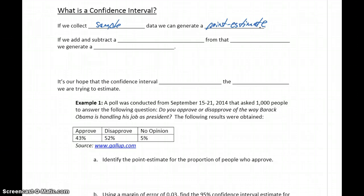When we're talking about proportions, our point estimate is that value p-hat, our sample proportion. If we add and subtract some margin of error from that point estimate, we generate a confidence interval.